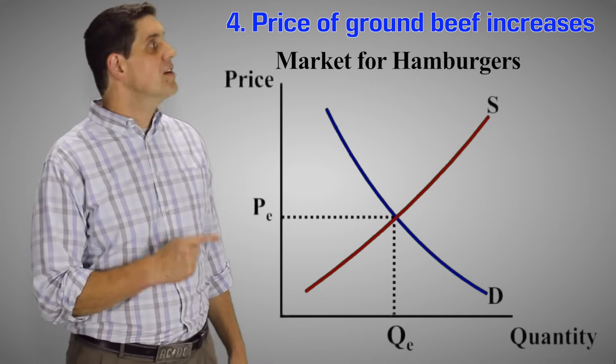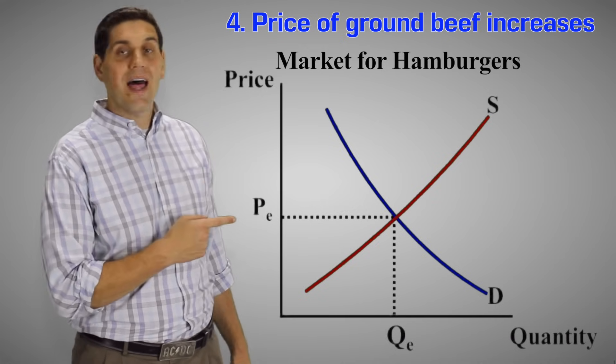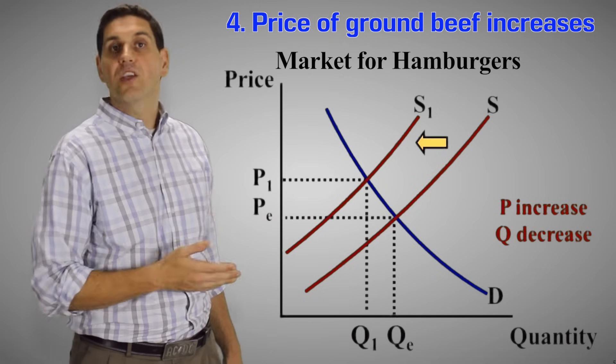For number four, if the price of ground beef, a key resource in the production of hamburgers increases, that means we're going to produce less hamburgers. So the supply will shift to the left, price will go up, and quantity will go down.